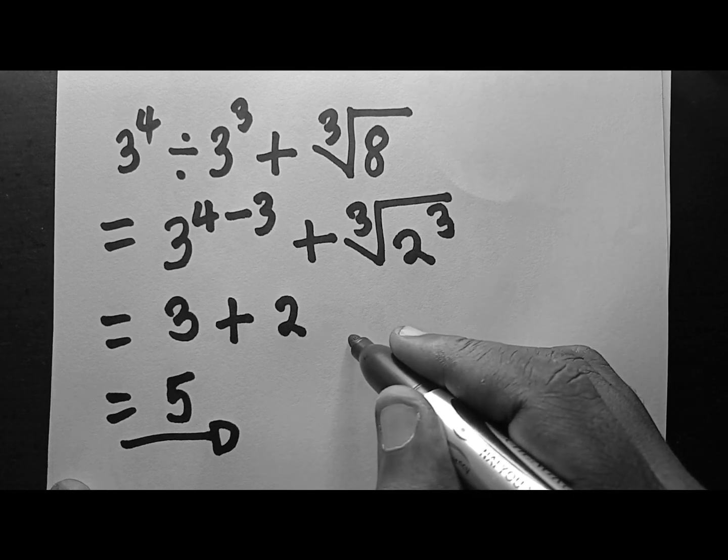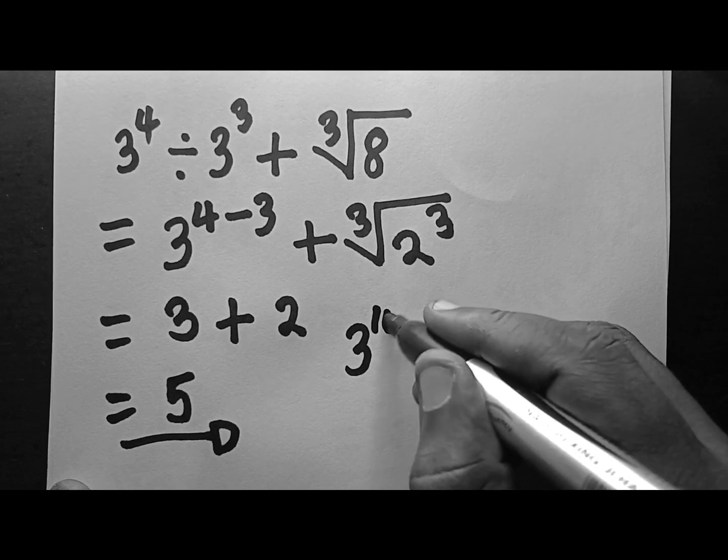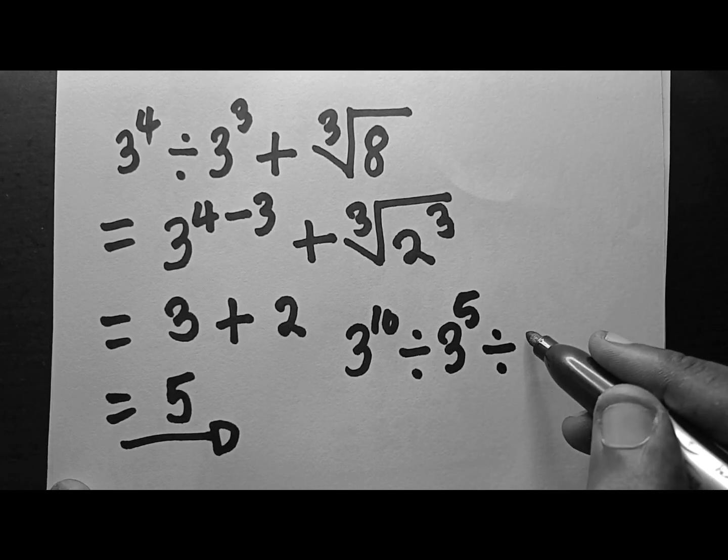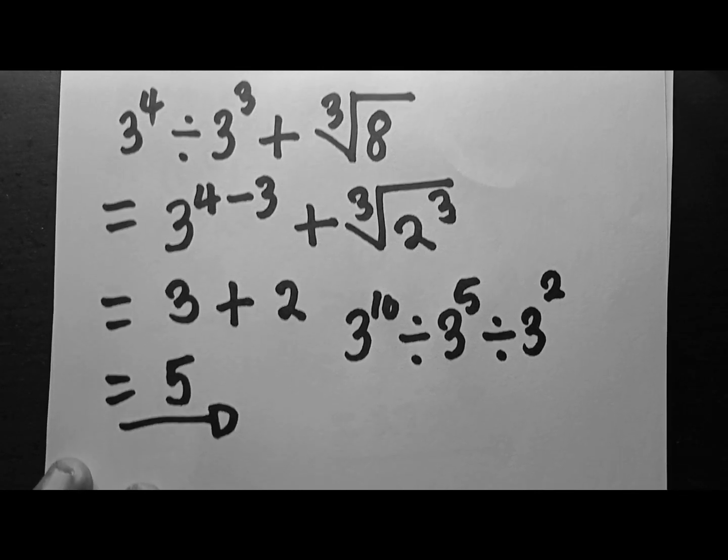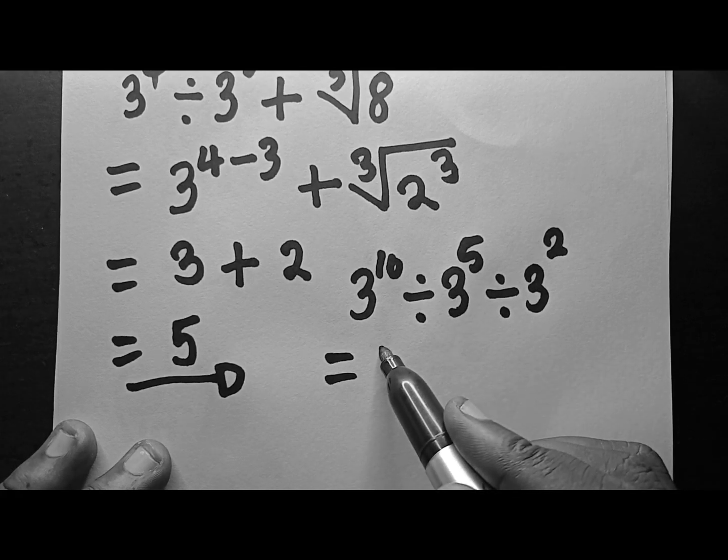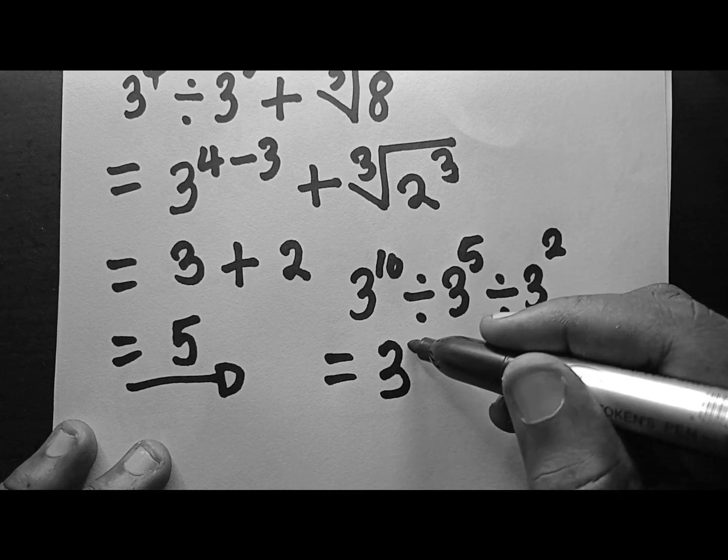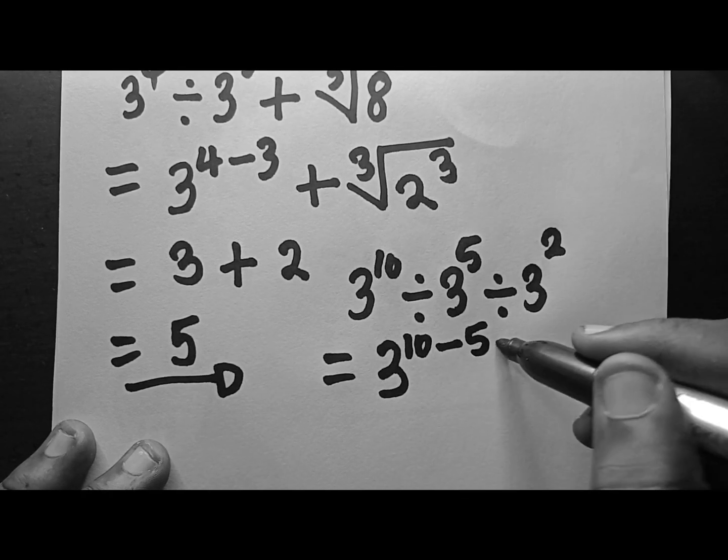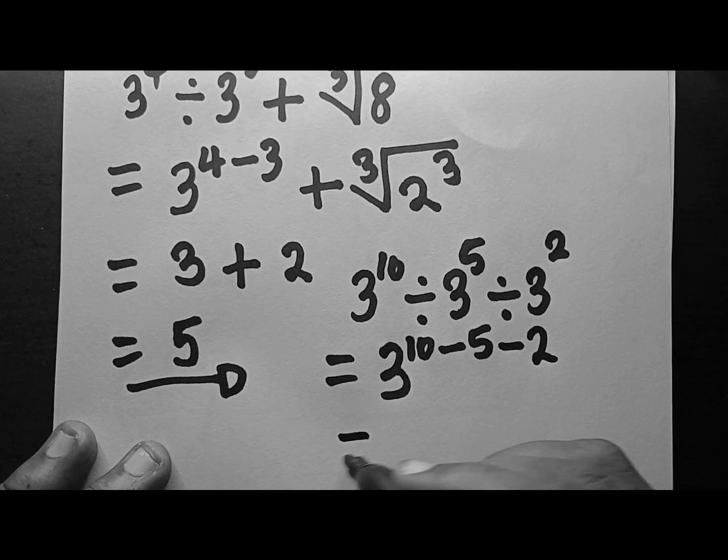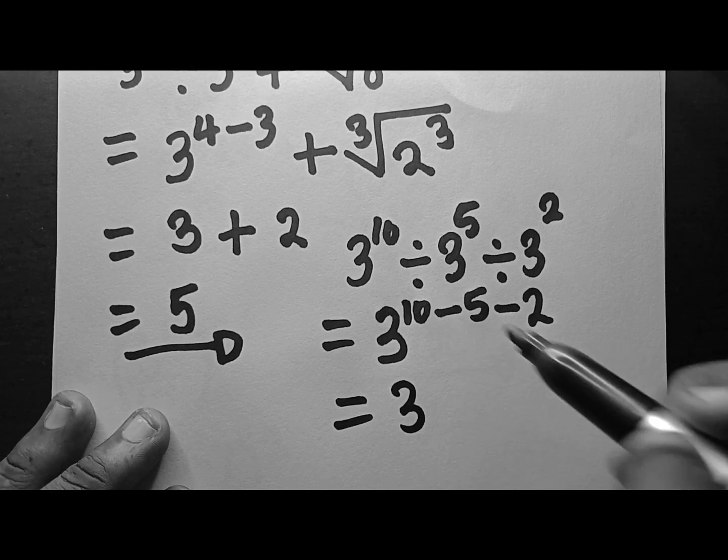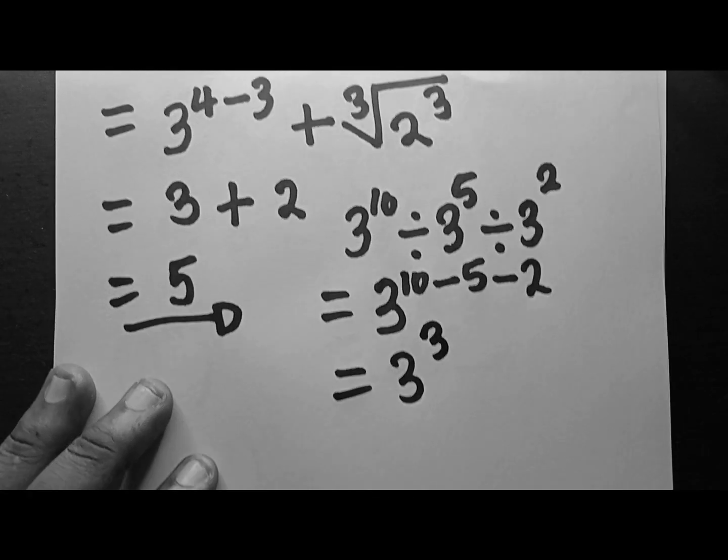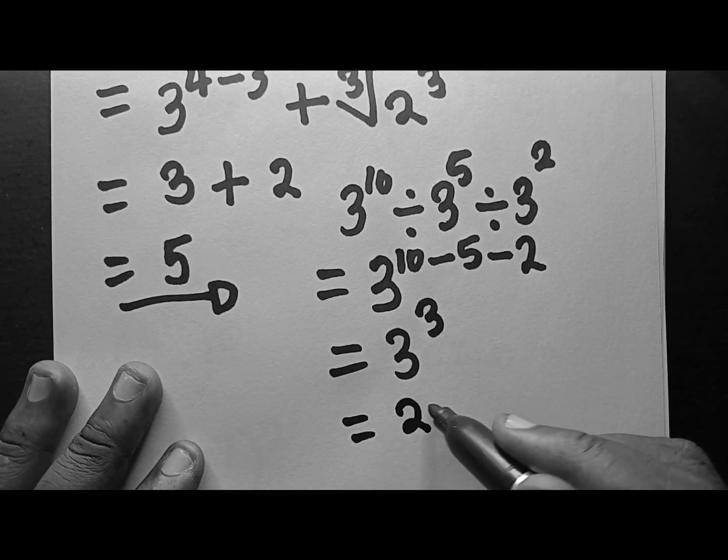But it's different. This time you are given 3 to the power of 10 divided by base 3 to the power of 5 divided by 3 to the power of 2. So now here, all the bases are the same and they are all divided. Here you are allowed to take as one base. The first exponent minus the second minus the third. So the exponent minus this one. And then you have this 3. So let's go. 10 minus 5 is 5, 5 minus 2 is going to be 3. So 3 to the power of 3, we all know that is 27.